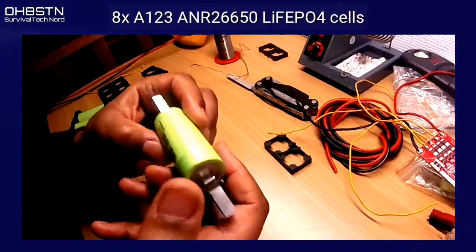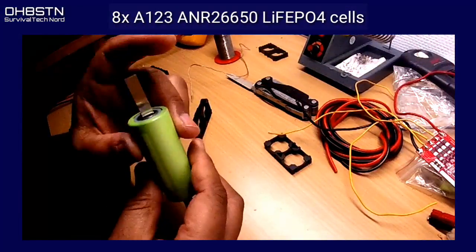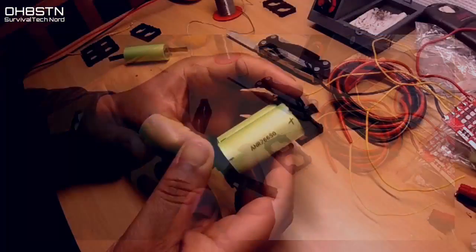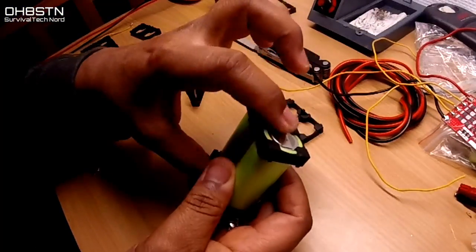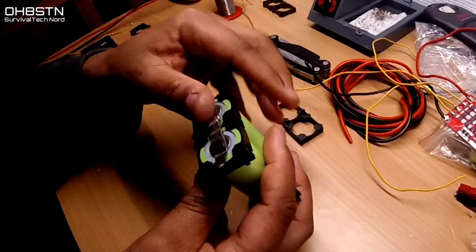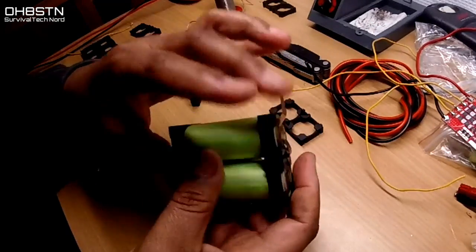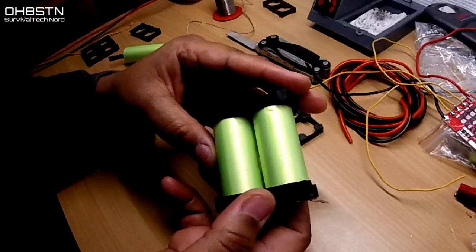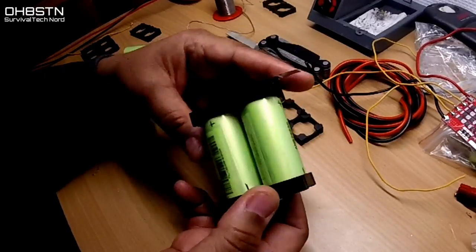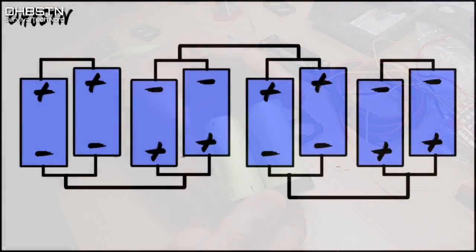As we said in the introduction, we're using A123 ANR 26650 lithium iron phosphate cells. The difference in this build from others is that we're going to do it in 2P configuration - that's two batteries in parallel, four in series. Each cell is 2.5 amp hours, so when we combine them in parallel that's going to give us a 5 amp hour pack.